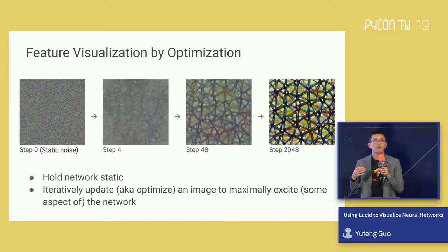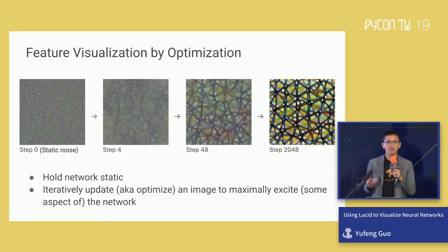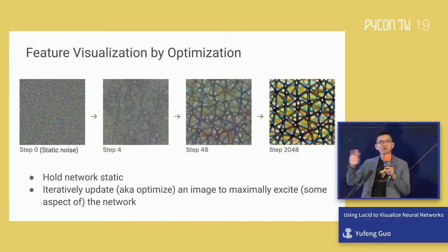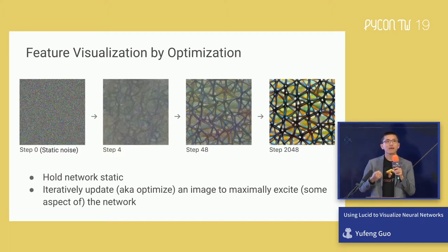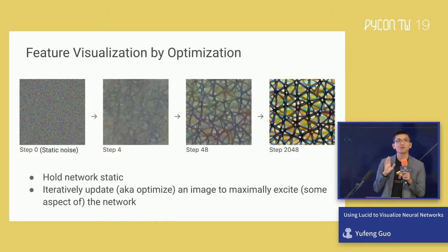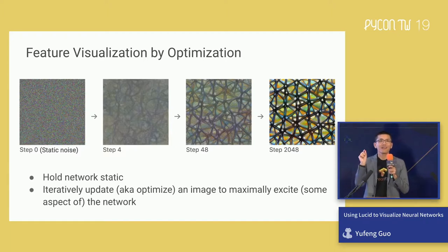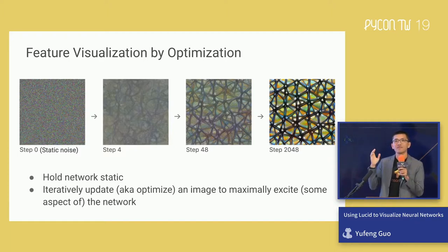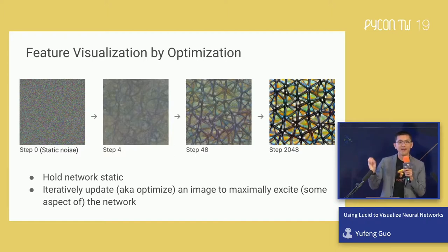How do we create these visualization images? One of the first approaches was optimizing the input. We take a trained Inception V1 network, freeze the entire thing, and instead of updating the model, we optimize the input image. We start with static noise and iteratively update it. Because the model is differentiable, we can backpropagate the activation we're interested in — a neuron or channel — and optimize for maximal activation of that aspect of the network.